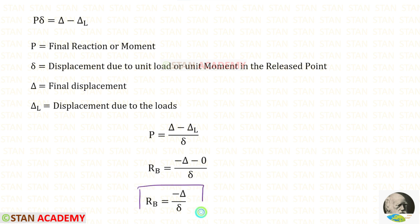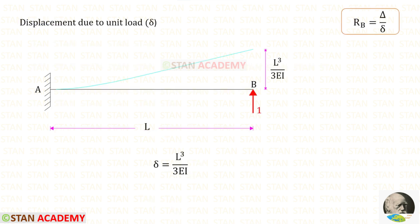In this way for rb we will get minus delta upon delta. Now let us find delta. To find delta we have to apply unit load in the direction of rb. You can see that I have applied unit load in the direction of rb.